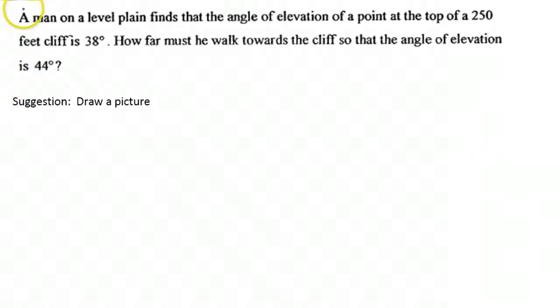A man on a level plane finds the angle of elevation of a point at the top of a 250-meter cliff is 38 degrees. How far must he walk towards the cliff so that the angle of elevation is 44 degrees?